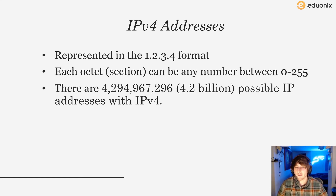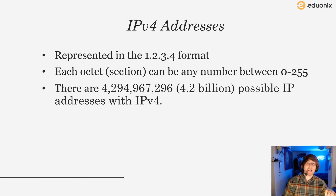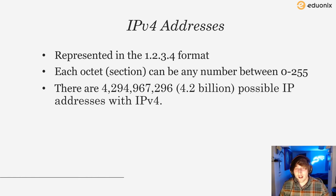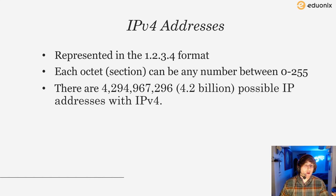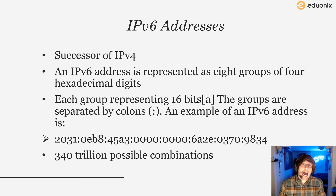This gives us about 4.3 billion different IP addresses or unique identifiers for devices. Keep in mind that any device connecting to the internet needs one of these IP addresses so we can identify and communicate with it. Now 4.3 billion sounds like a lot, but as we've connected our phones, Kindles, refrigerators, smart light bulbs, smart homes, and Amazon Alexa devices to the internet, this number has begun to run out. So IPv4, at 4.3 billion IPs, is actually not enough — hence we created its successor, IPv6.